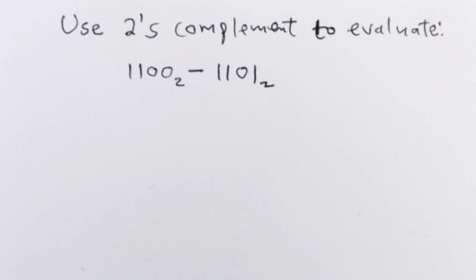Welcome to Calvin's online math. Let us look at this equation from binary numbers. Use 2's complement to evaluate 1100 base 2 minus 1101 base 2.